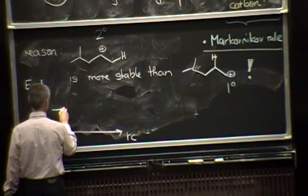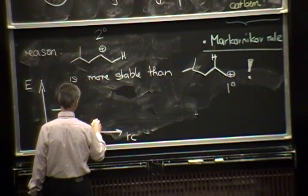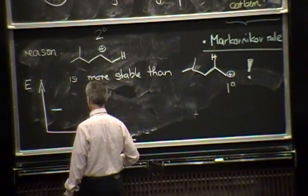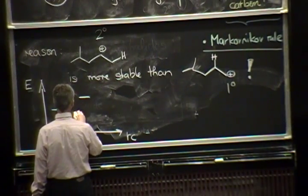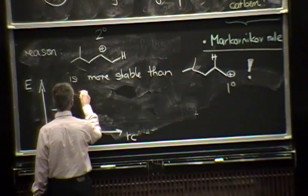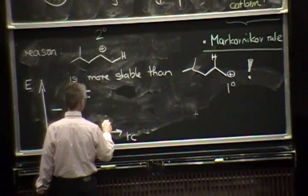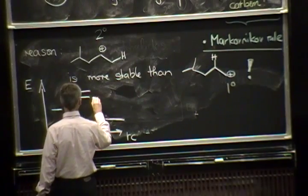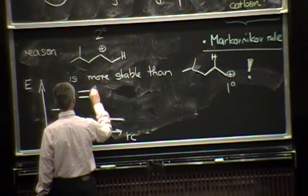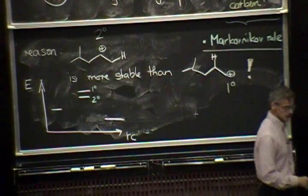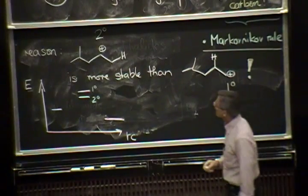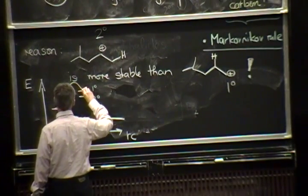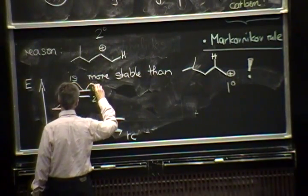We start out with our alkyne and we have two possibilities. We have the secondary carbocation. Actually, I should... We have the secondary carbocation and we have the primary carbocation. And then we have our product. So, this is the secondary carbocation is more stable than the primary carbocation. And so, when I look at the distribution here...